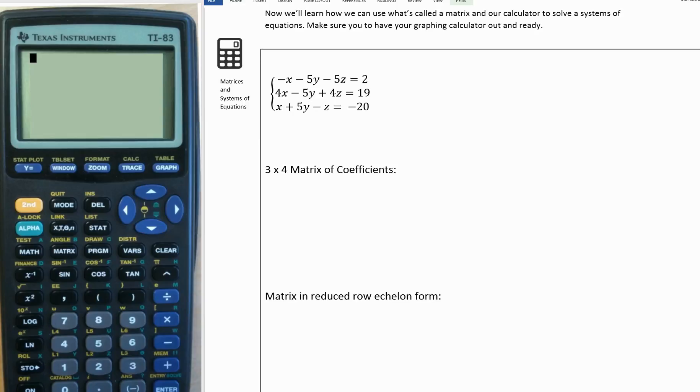Here's the system we're going to look at: negative x minus 5y minus 5z equals 2; 4x minus 5y plus 3z equals 19; and x plus 5y minus z equals negative 20.